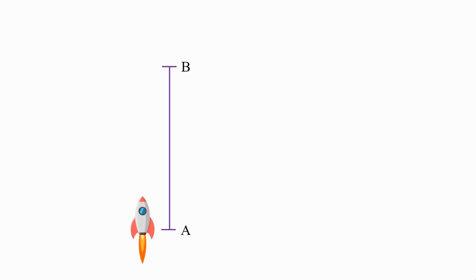Let's take one more example. A rocket moved from point A to B covers 36,000 km distance in 12 hours. Velocity of the rocket is equal to displacement upon time.